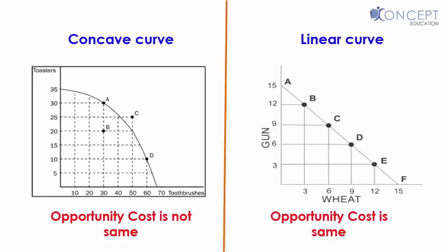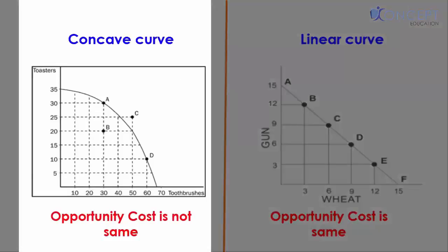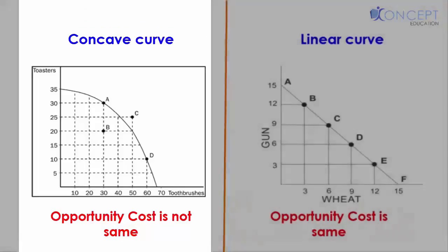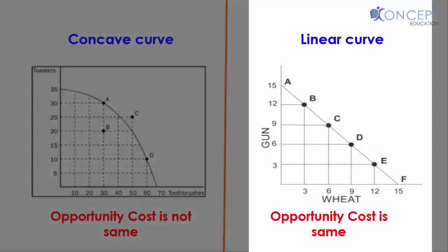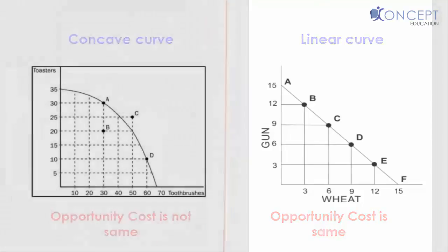Now, as my opportunity cost is not similar every time, like one toaster for one toothbrush or one toaster for five toothbrushes every time, that is the reason that my PPC is concave. Because my opportunity cost is not the same. If my opportunity cost was the same every time, the amount or my PPC would be a linear line. This is a very important element. Please understand it as this is asked in a lot of exam that when will PPC be linear? When the opportunity cost is the same, then it will be linear.